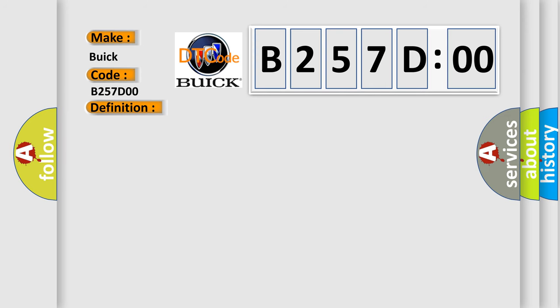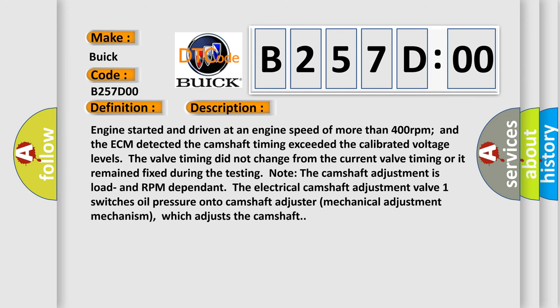And now this is a short description of this DTC code. Engine started and driven at an engine speed of more than 400 revolutions per minute and the ECM detected the camshaft timing exceeded the calibrated voltage levels. The valve timing did not change from the current valve timing or it remained fixed during the testing. Note the camshaft adjustment is load and RPM dependent. The electrical camshaft adjustment valve one switches oil pressure onto camshaft adjuster mechanical adjustment mechanism, which adjusts the camshaft.